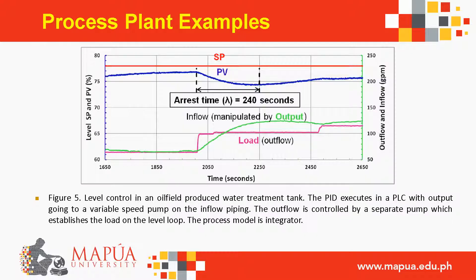Level control in an oil field produced water treatment tank: the PID executes in a PLC with output going to a variable speed pump on the inflow piping. The outflow is controlled by a separate pump which establishes the load on the level loop. The process model is integrator.